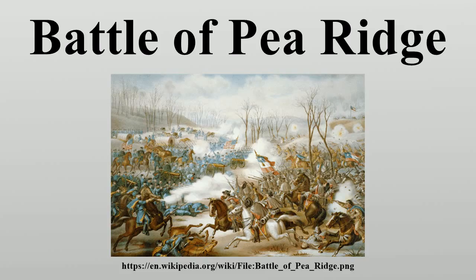Curtis placed his four small divisions astride the Telegraph or Wire Road in a fortified position atop the bluffs north of Little Sugar Creek. The Telegraph Road went northeast to Elkhorn Tavern where it intersected the Huntsville Road leading east and Ford Road leading west. From Elkhorn, the Wire Road continued north and down into Cross Timber Hollow before crossing the border into Missouri. From there, the Federal supply line followed the Telegraph Road northeast to St. Louis. The hamlet of Leetown lay northwest of the Telegraph Road, about halfway between Curtis' position on the bluffs and Ford Road. Curtis made his headquarters at Pratt's store, located on the Wire Road between Elkhorn and Little Sugar Creek.